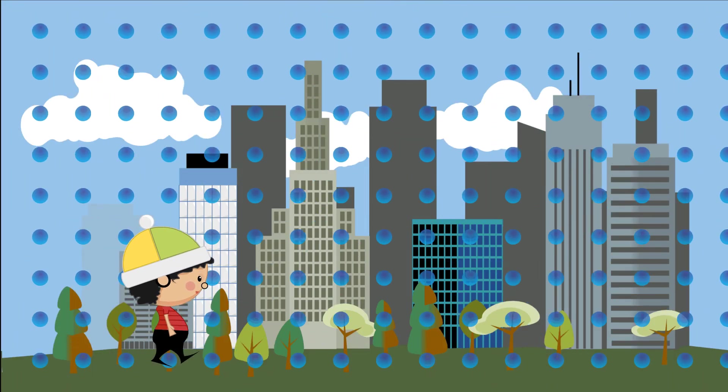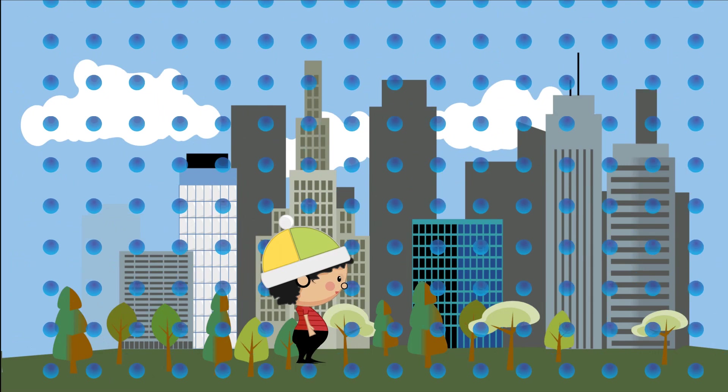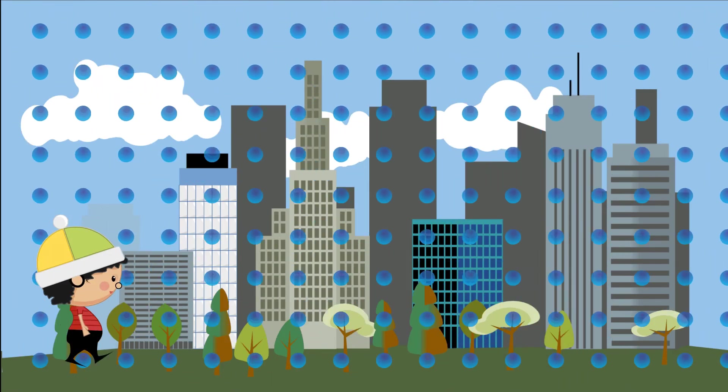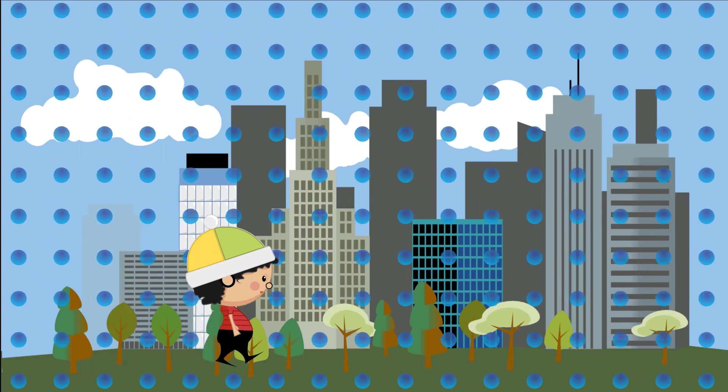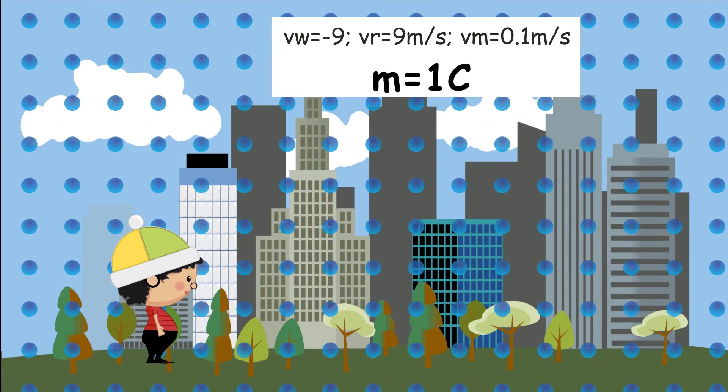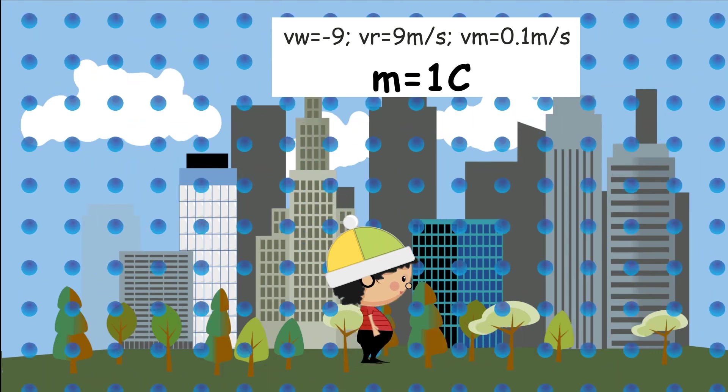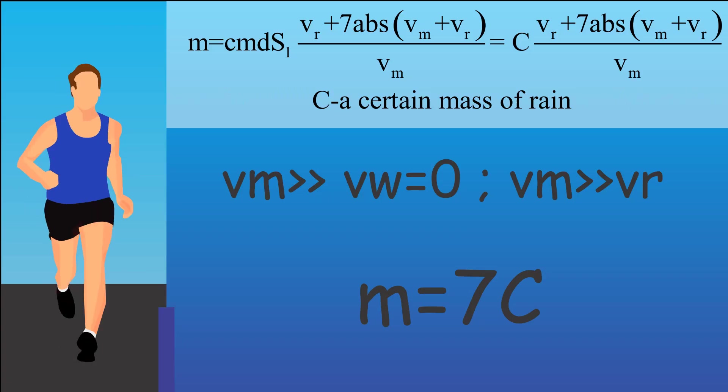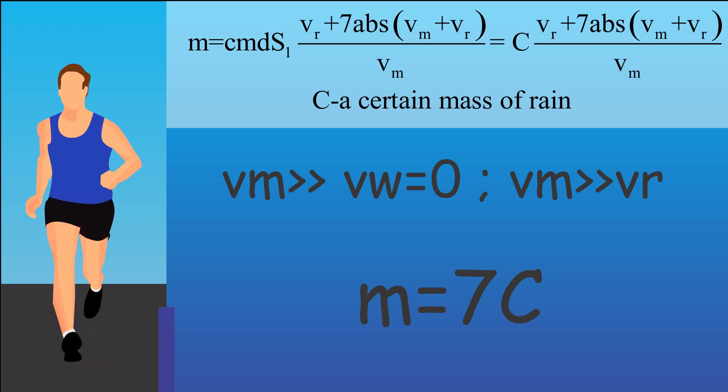The least wet you can get is actually when wind blows in your back and you move with the same speed as the wind, in this case you don't get rain in your front or back. So for the wind speed equal to 9 meters per second, while running with also 9 meters per second, you take only 1 mass unit of rain. Finally, if you would move extremely fast, you would still take all the rain in front of you, which would be 7 mass units.